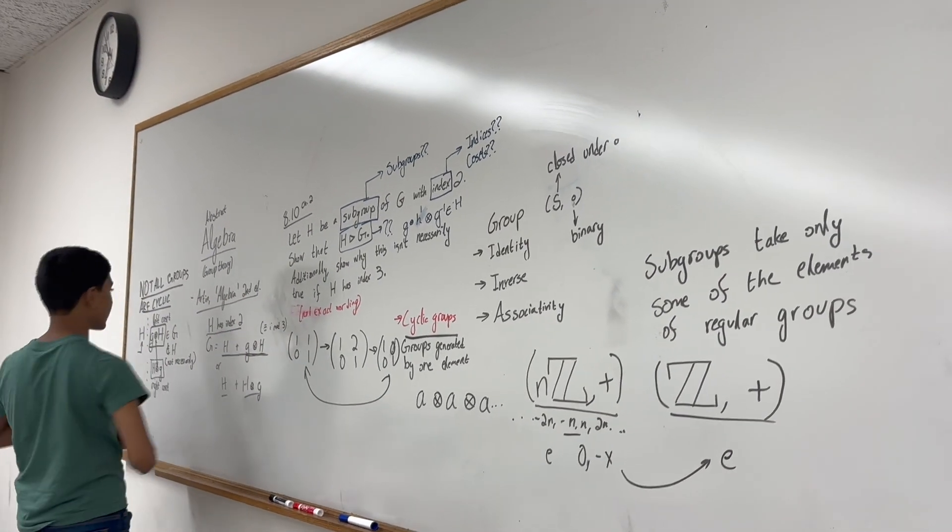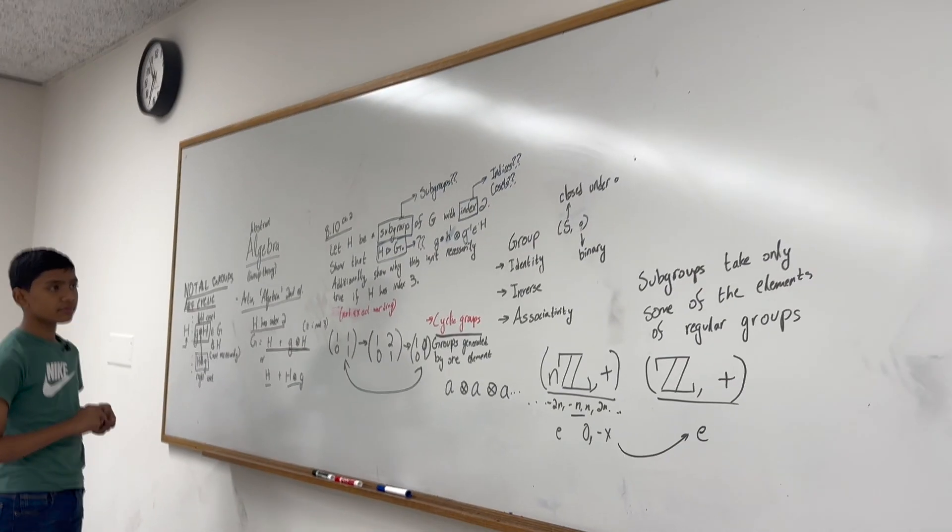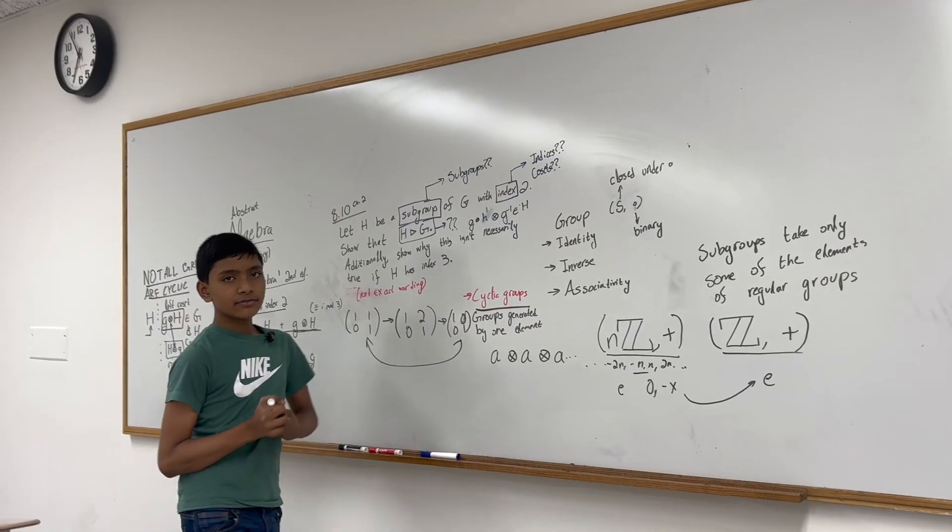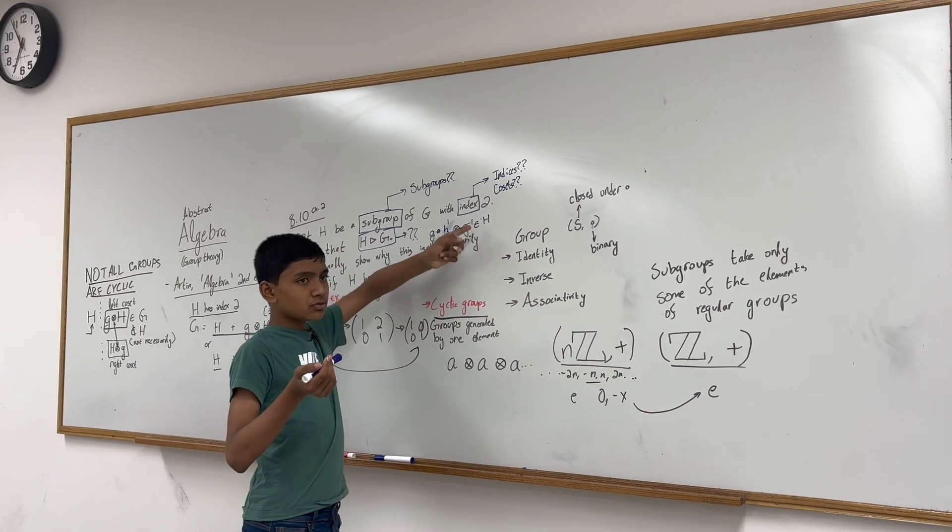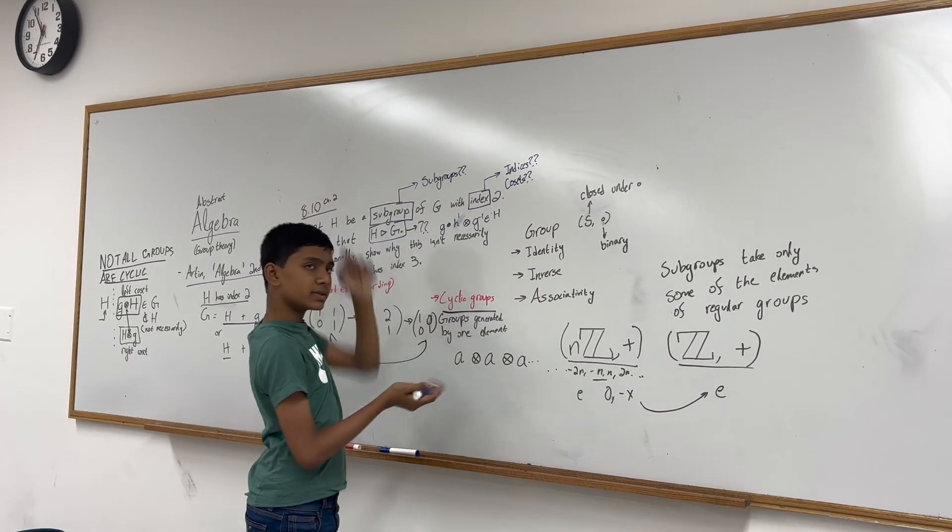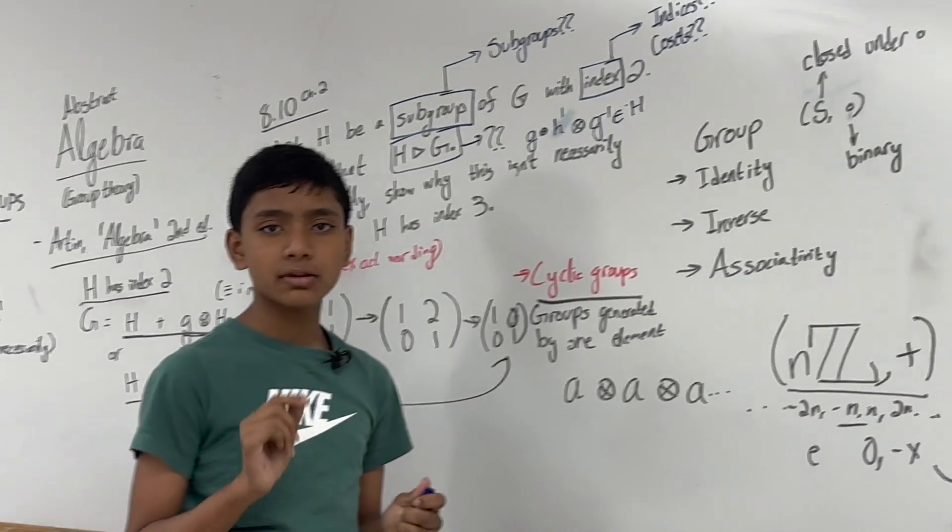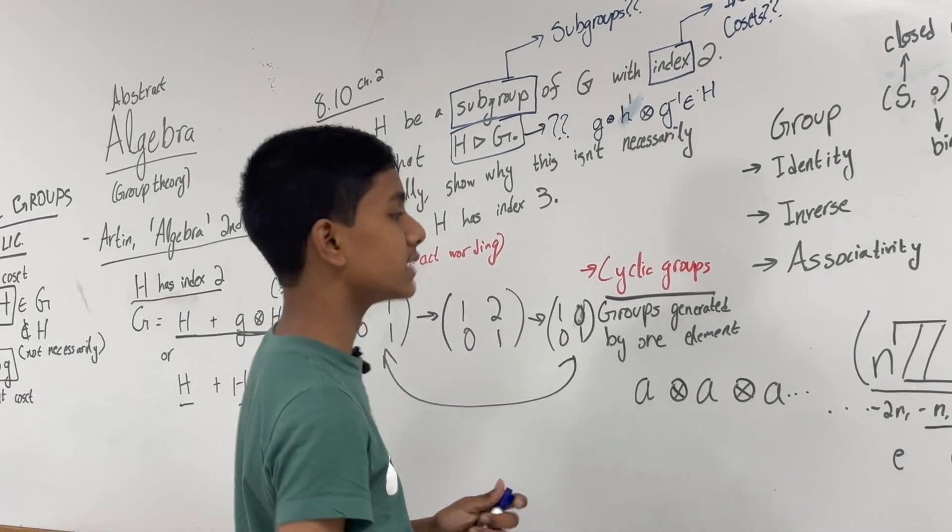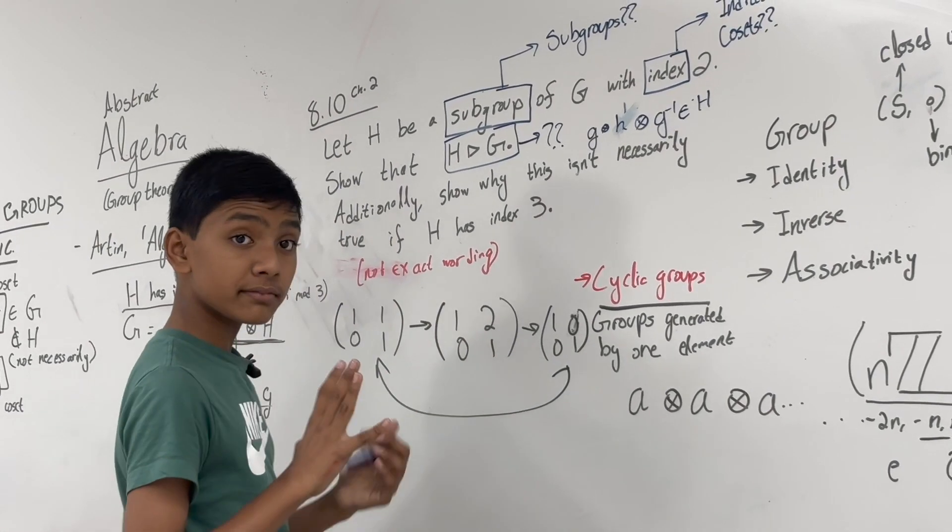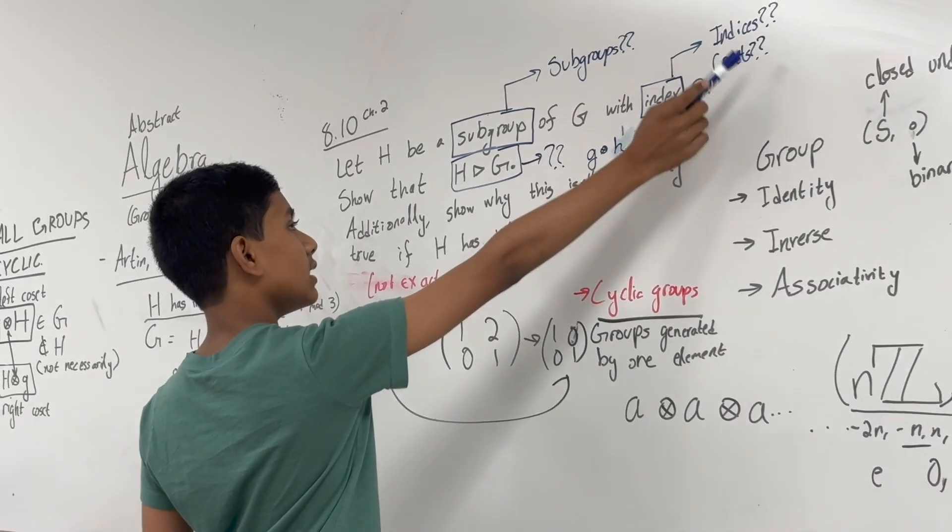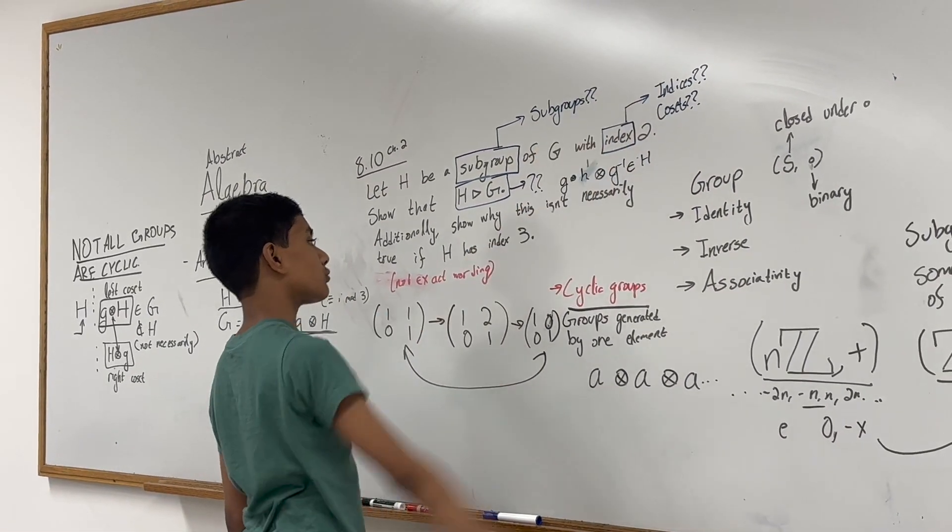So it's kind of like a map from H to itself. And of course, this isn't satisfied by every single group. That's why it's very special for a group to satisfy this. We'll talk about the purpose of group satisfying this later. So that's what it means to be normal, to be a coset, to have an index, and to be a subgroup.